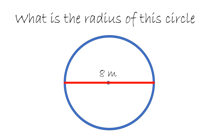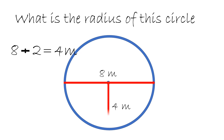What is the radius of this circle? Here we are given a circle and the diameter is 8 meters. Now, what we do is we just take the diameter and divide it by 2 and we get 4 meters. The radius is 4 meters.